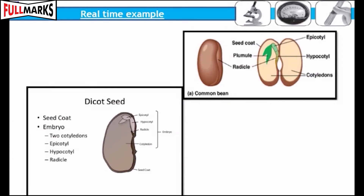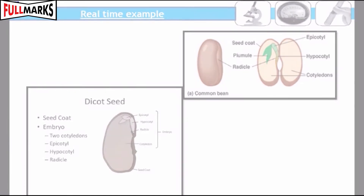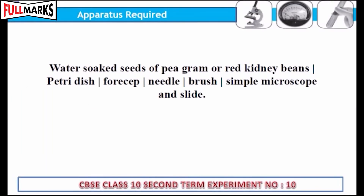A real-time example to study the different parts of an embryo of a dicot seed is helpful for understanding seed formation. We will study the seed embryo, cotyledons, epicotyl, hypocotyl, and nutrients. For this experiment, record and collect water-soaked seeds of pea, gram, or red kidney beans.